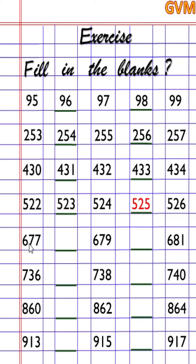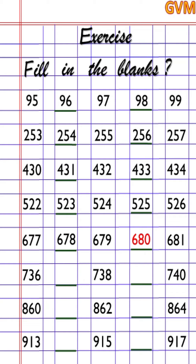Next is 677, 679, and 681. Between 677 and 679 the missing number is 678. Between 679 and 681 the missing number is 680. Next is 736, blank, 738, blank, 740. Between 736 and 738 the missing number is 737. Between 738 and 740 the missing number is 739.